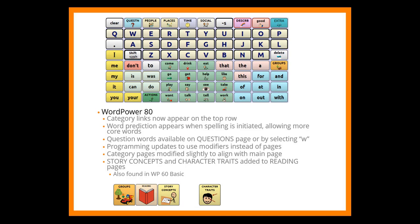The category pages were modified slightly to align with the main page. A new feature of the WordPower 80 and 60 Basic files are story concepts and character traits — great additions for literacy and concepts of print development.